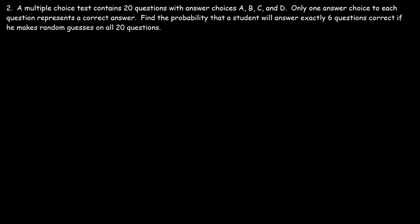Number 2. A multiple choice test contains 20 questions with answer choices A, B, C, and D. Only one answer choice to each question represents a correct answer. Find the probability that a student will answer exactly six questions correct if he makes random guesses on all 20 questions.